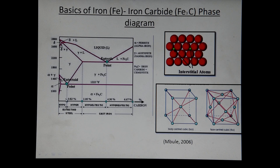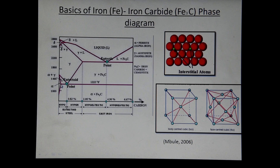Looking at this phase diagram on the left, the vertical line represents pure iron, and the line on the right represents cementite, which is Fe3C or iron-carbide. This region here is alpha, also called ferrite. It is very soft and ductile iron and has very little solubility of carbon — about 0.02 weight percent.